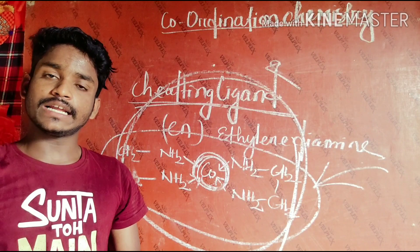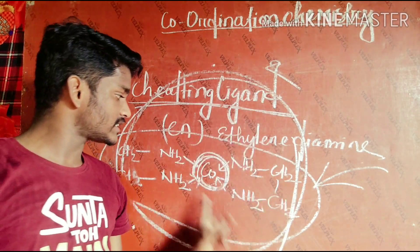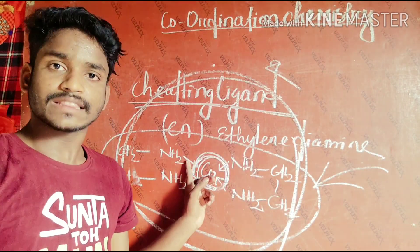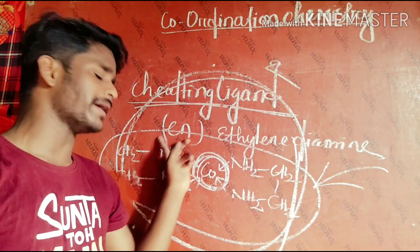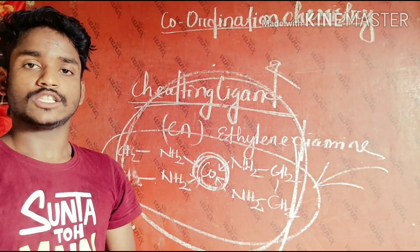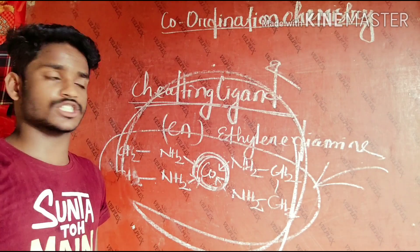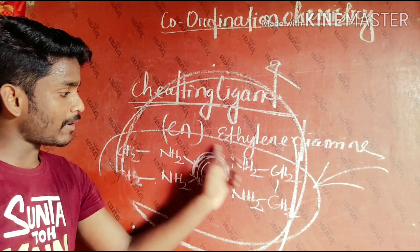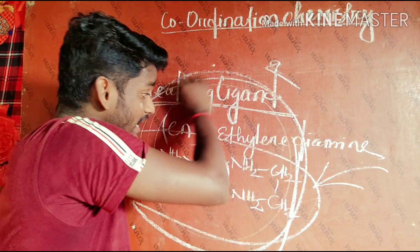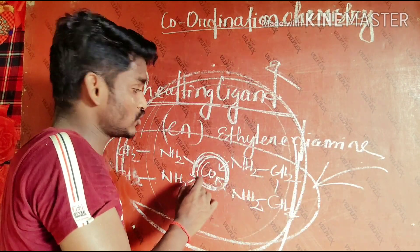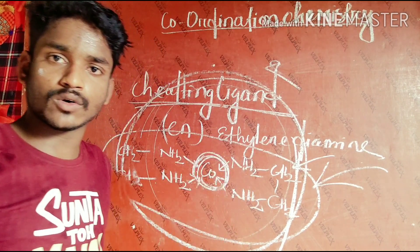Chelating ligands have a special quality: they form a ring-like structure around the central metal atom. Due to the presence of a chelating ligand, the compound becomes more stable. This is because the chelating ligand forms a ring-like structure — this stabilizing effect is called the chelating effect.